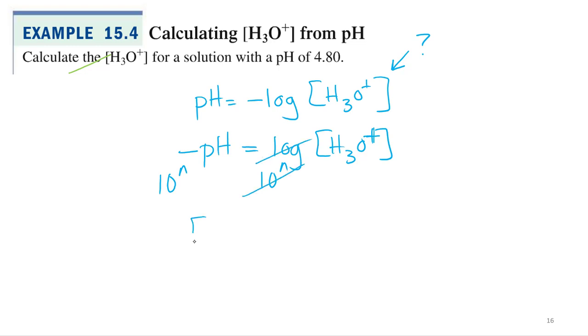And so now we've got hydronium equals 10 to the negative pH, so 10 to the negative 4.80. Now that's usually the second or shift log button on your calculator if you're looking for the anti-log of base 10.